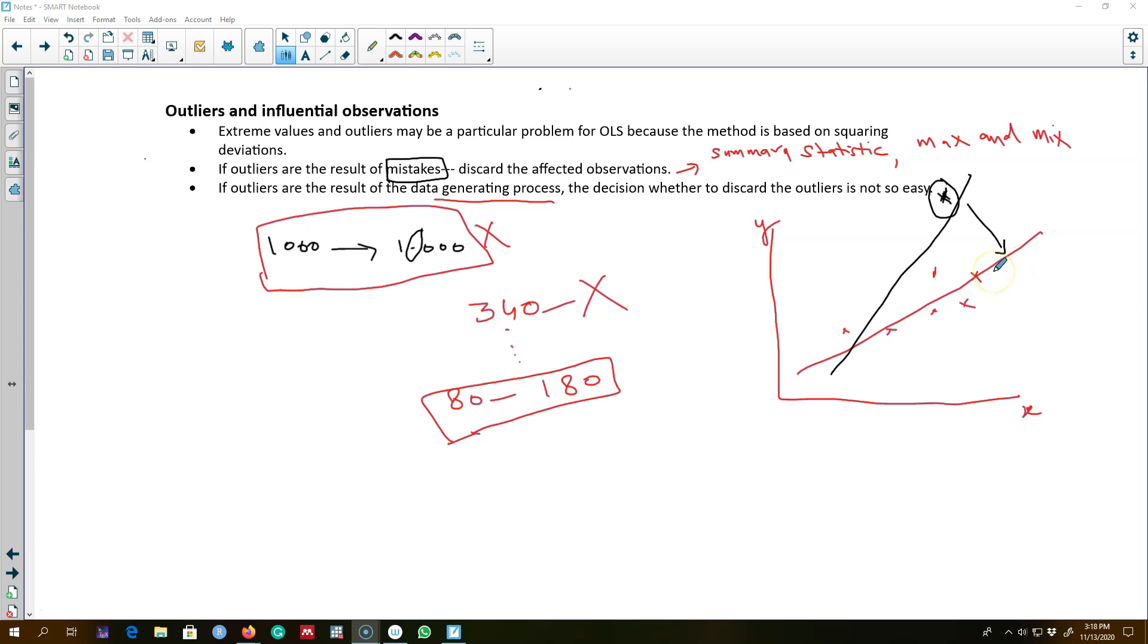So rather than trying to determine which observations are having a huge impact on OLS estimators, it will be much better if we have another estimator which is less sensitive to influential observations or outliers.